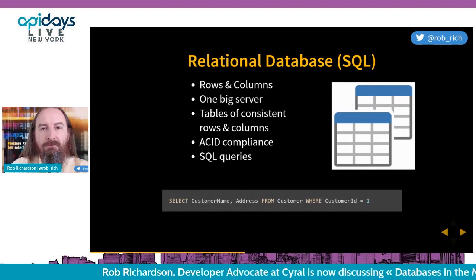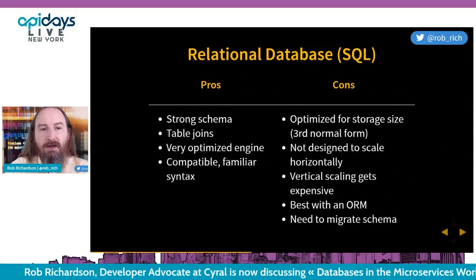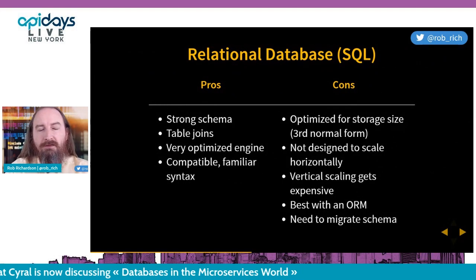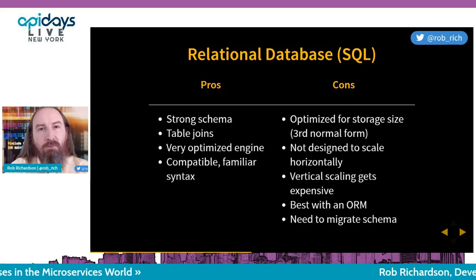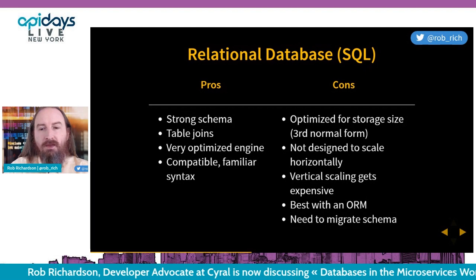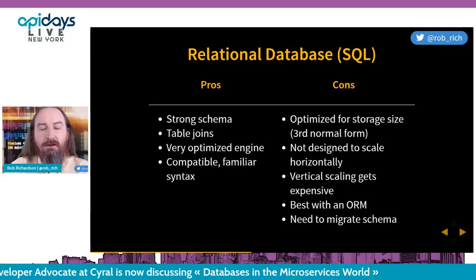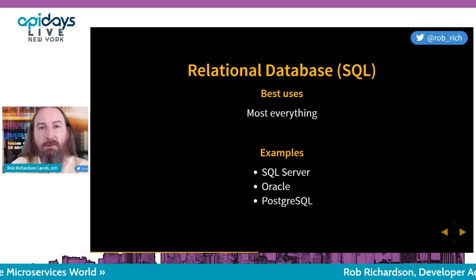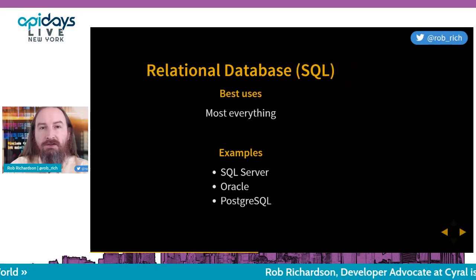On the upside, relational databases have a strong schema, table joins, a very optimized engine, and familiar compatible syntax. On the downside, it was built in an era without multiple processors working together, so generally a relational database is one big machine — we can vertically scale easily, but horizontal scaling is hard. Relational databases are a good default; if you have a monolithic database today, it's probably a relational database.